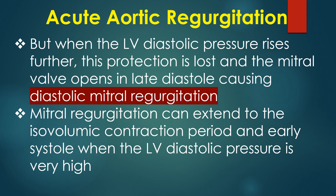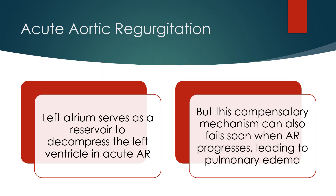Mitral regurgitation can extend to the isovolumic contraction period and early systole when the LV diastolic pressure is very high. Left atrium serves as a reservoir to decompress the left ventricle in acute AR. But this compensatory mechanism can also fail soon when AR progresses, leading to pulmonary edema.